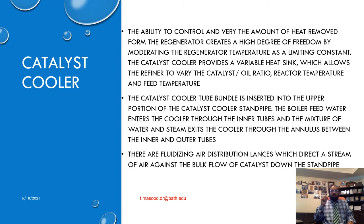The catalyst cooler tube bundle is inserted into the upper portion of the catalyst cooler standpipe. Boiler feed water enters the cooler through the inner tubes, and mixtures of water and steam exit through the annulus between the inner and outer tubes. There are fluidization air distribution lancers which direct a stream of air against the bulk flow of catalyst down the standpipe. Air from the fluffing air compressor is delivered to a common manifold supplying all the distribution lancers via a flow controller. The lancers contain a restriction orifice located near the piping header at the top of each lancer to help distribute the air uniformly over the cross-sectional area of the cooler. The counter-current fluidization air improves heat transfer by creating turbulence and mixing in the region of contact between the hot catalyst and tubes.